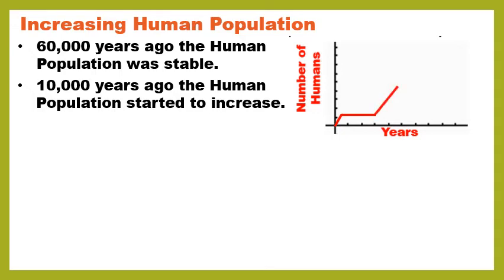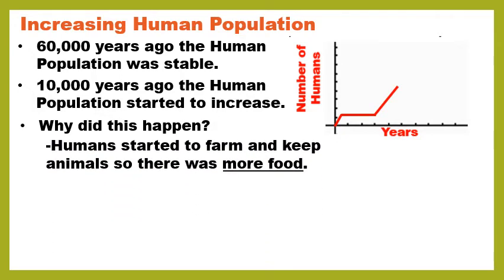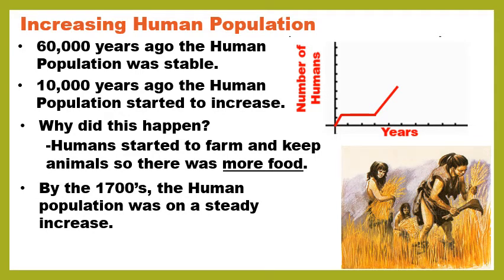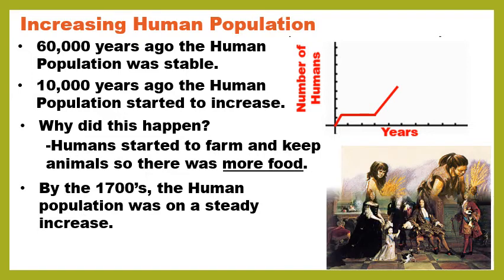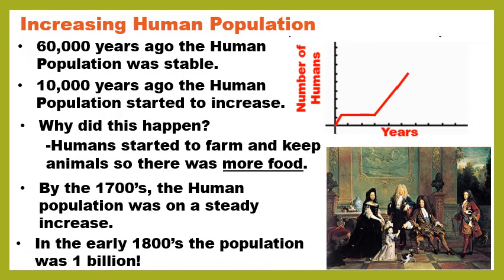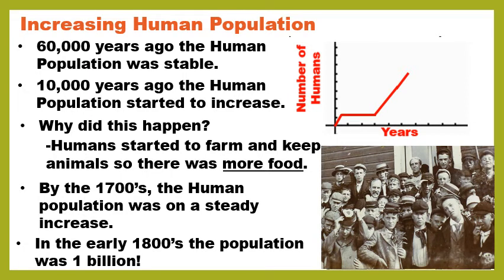By the 1700s the human population was on a steady increase — the graph line kept moving up. By the early 1800s the population reached 1 billion, which is a very big number.